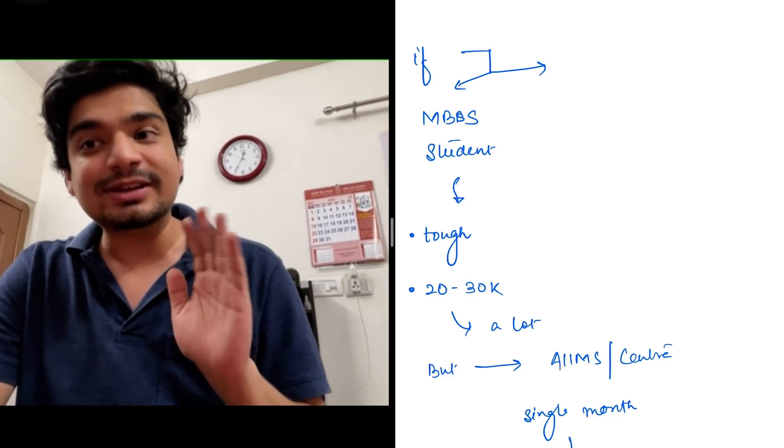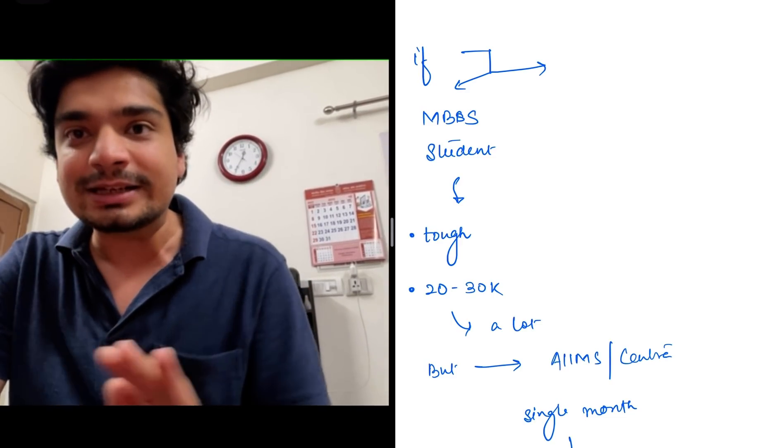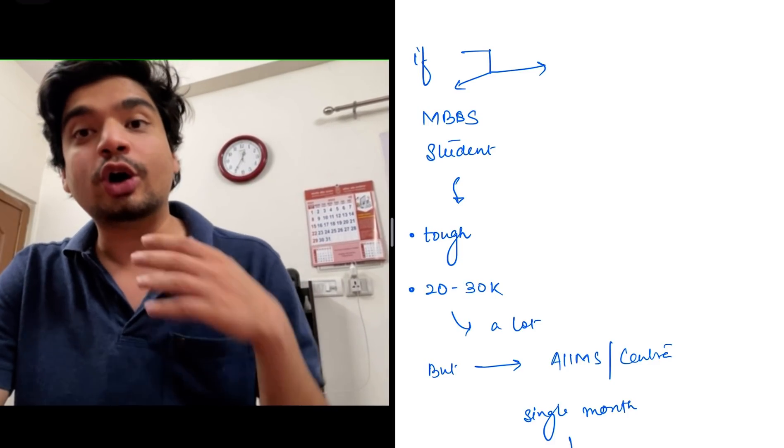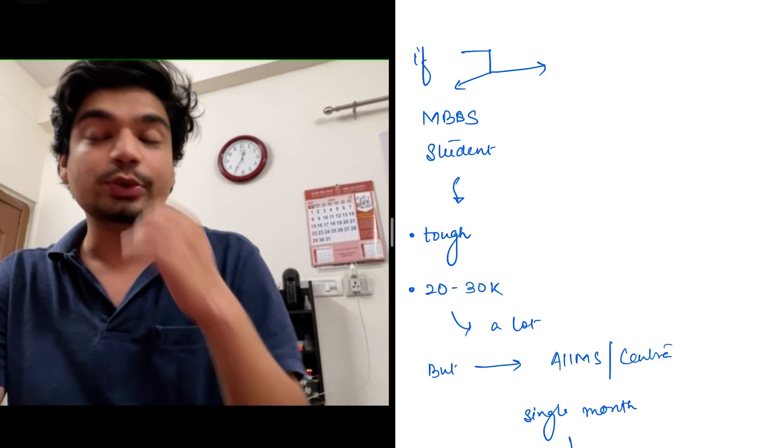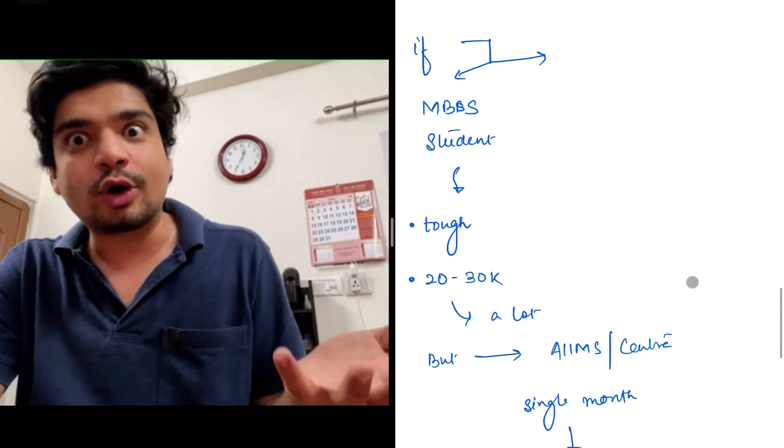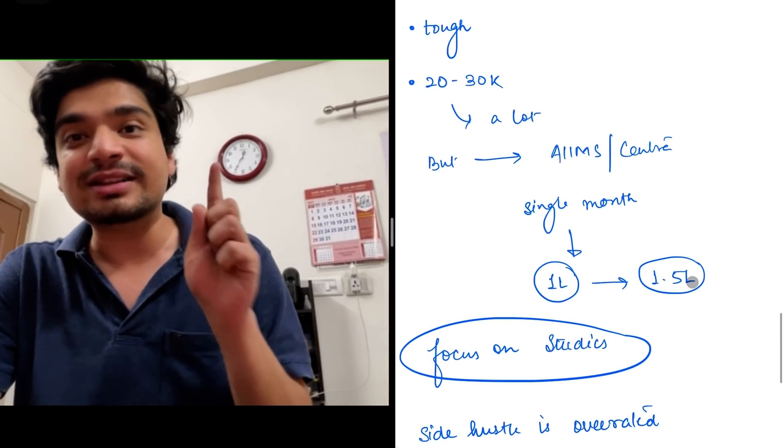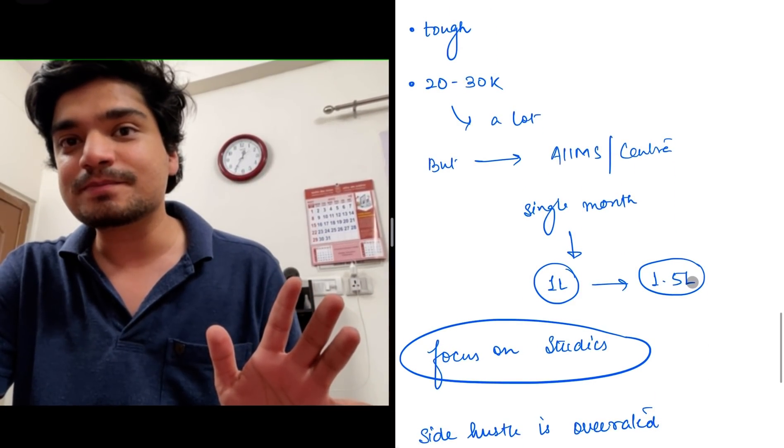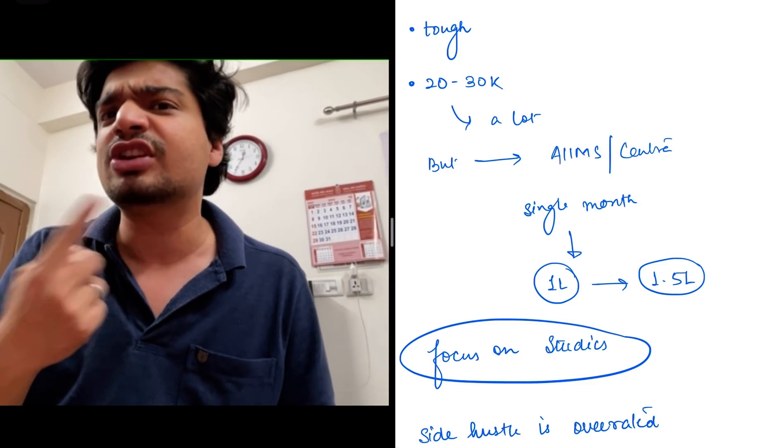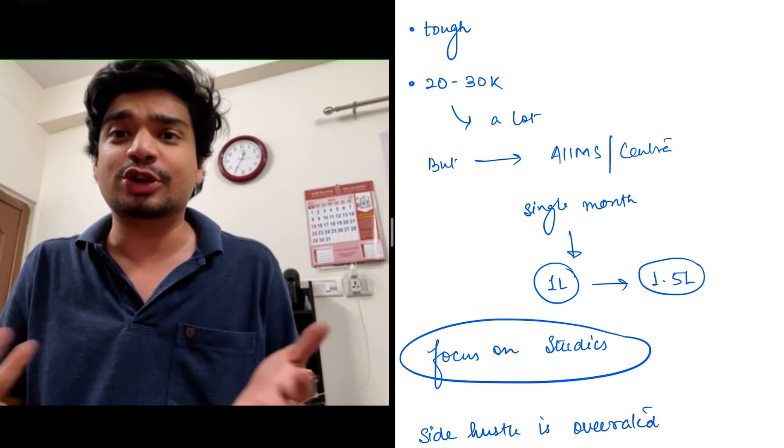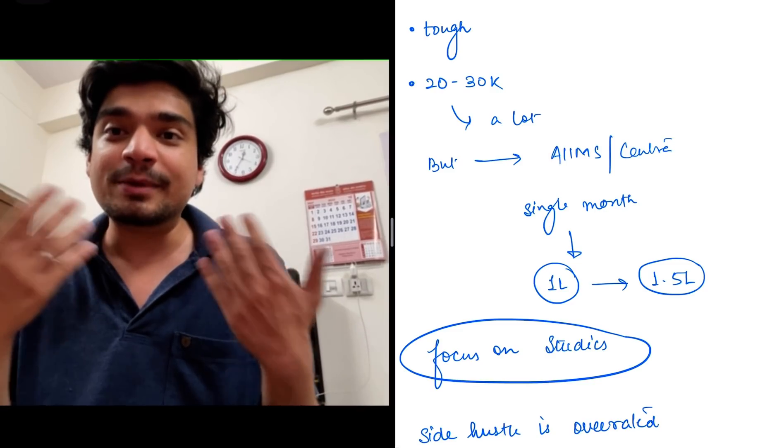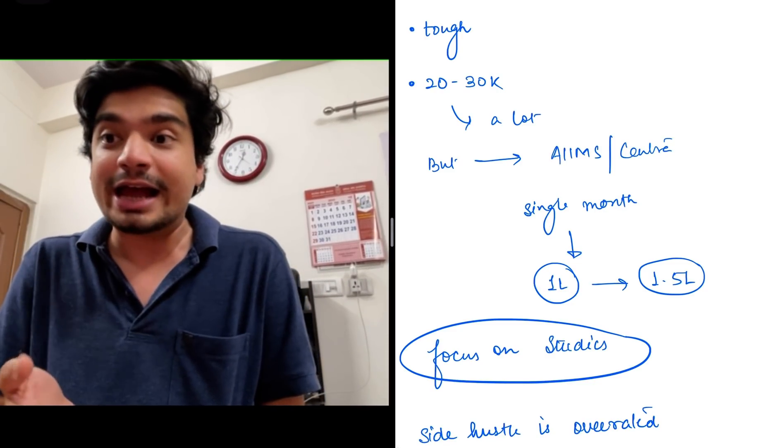20-25,000 during MBBS seems like a lot, but it's frankly peanuts. Because if, let's say, doing YouTube, you focus less on your studies and you do not get through NEET PG or you do not get through your desired college, or if you could have gotten through AIIMS or a Central Institute, the single month's salary is 1 lakh rupees. So if you crack your entrance after one year, you take an extra year because you're busy with YouTube during your MBBS, you will be losing 12 lakh rupees.